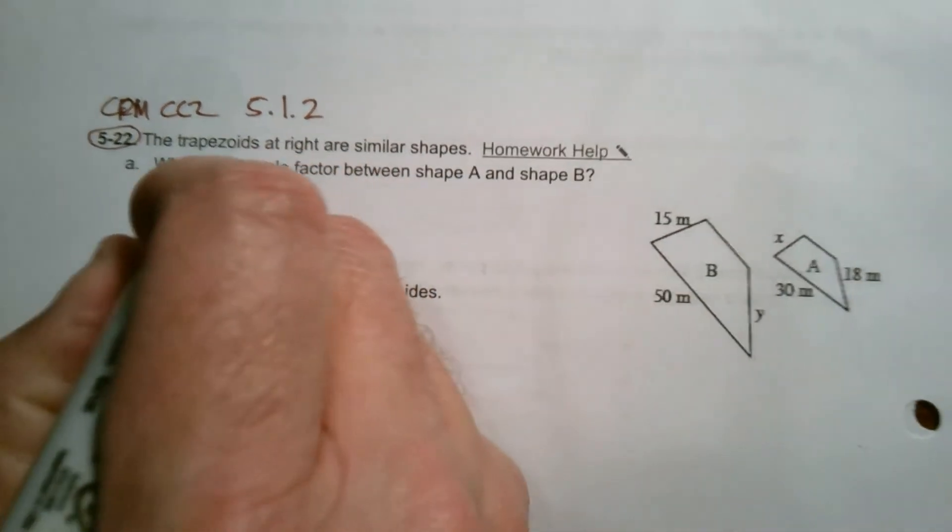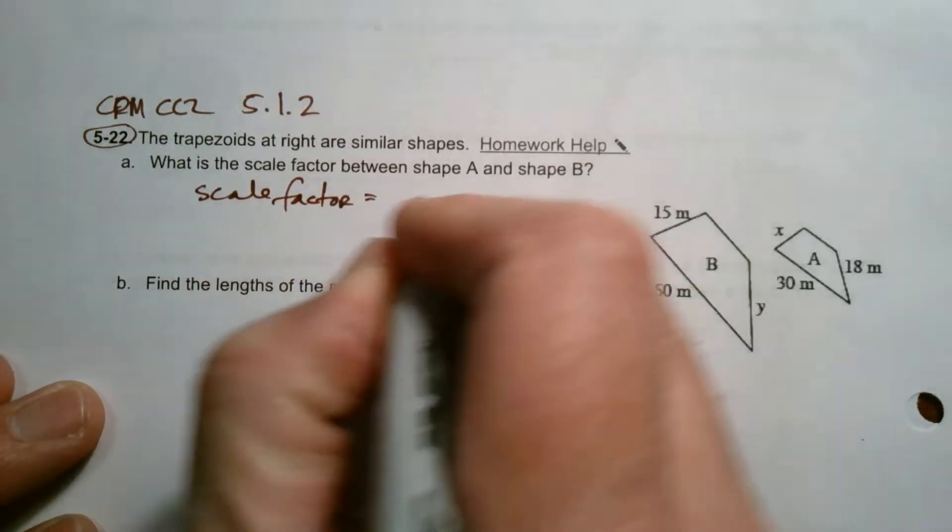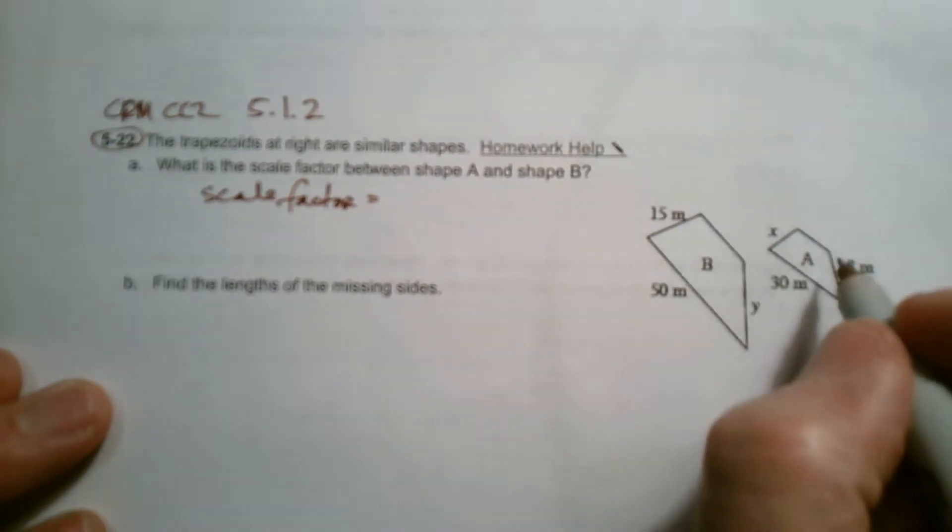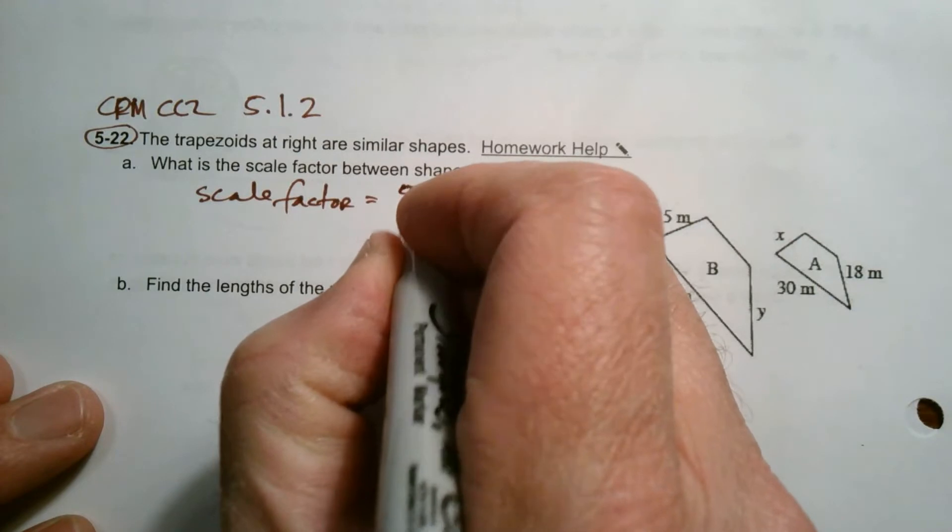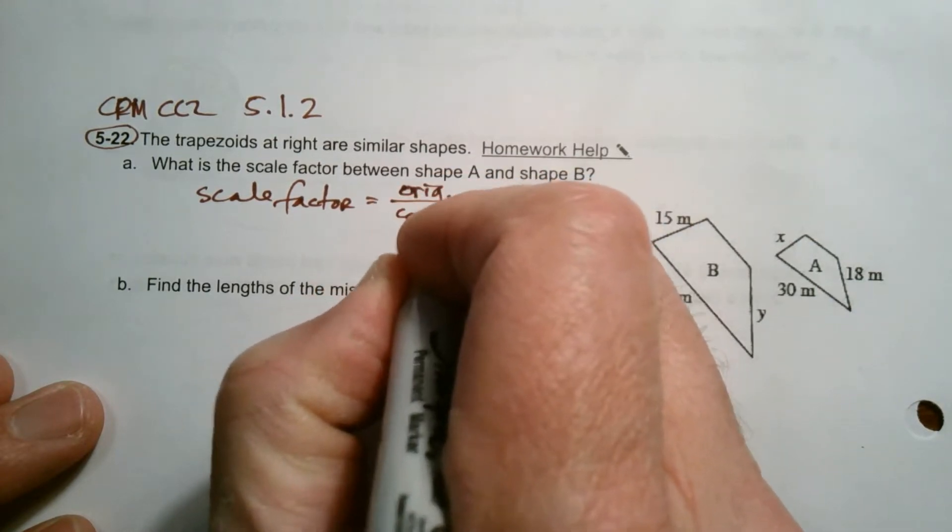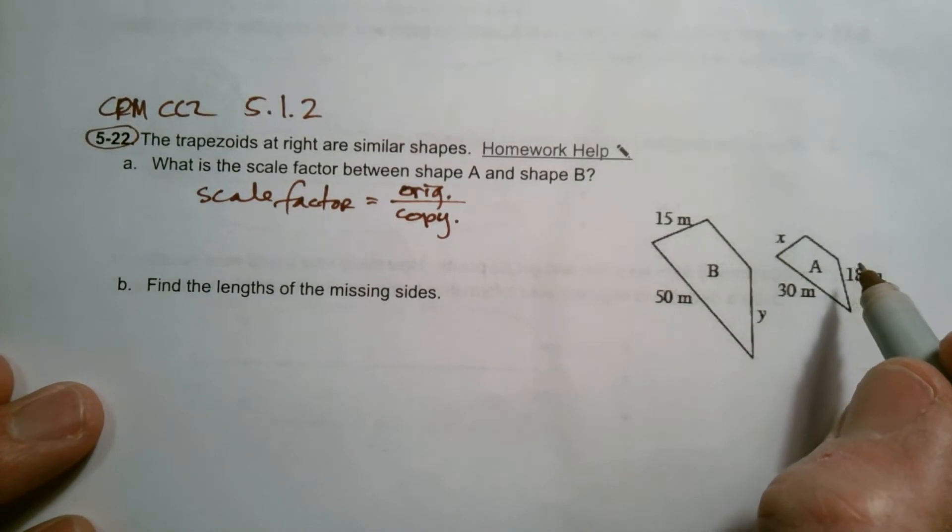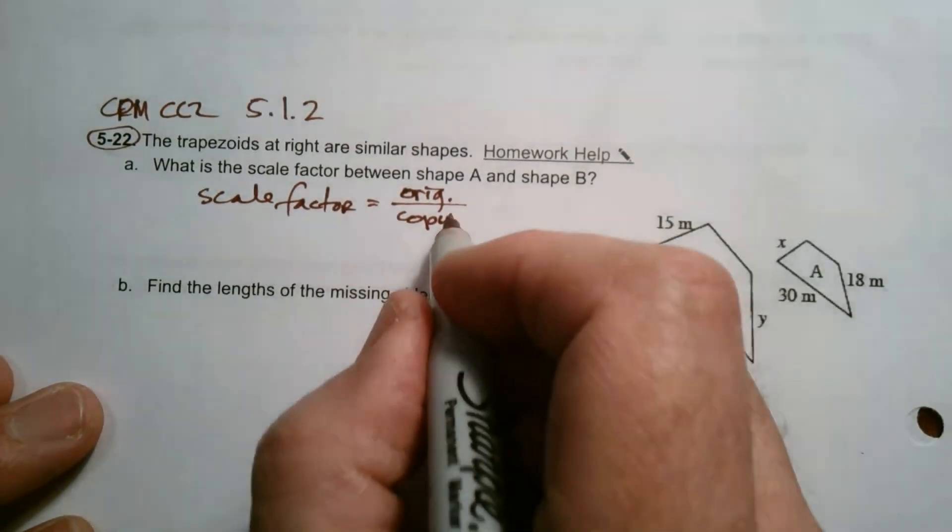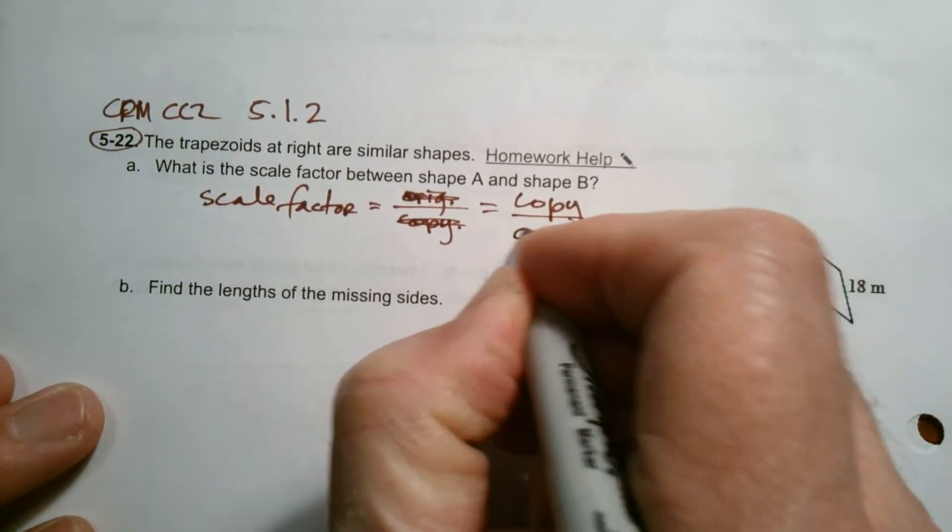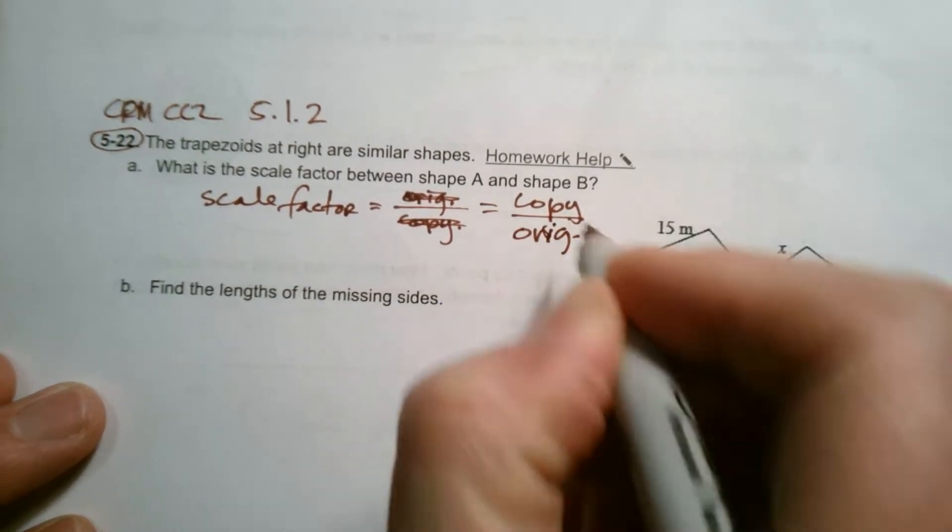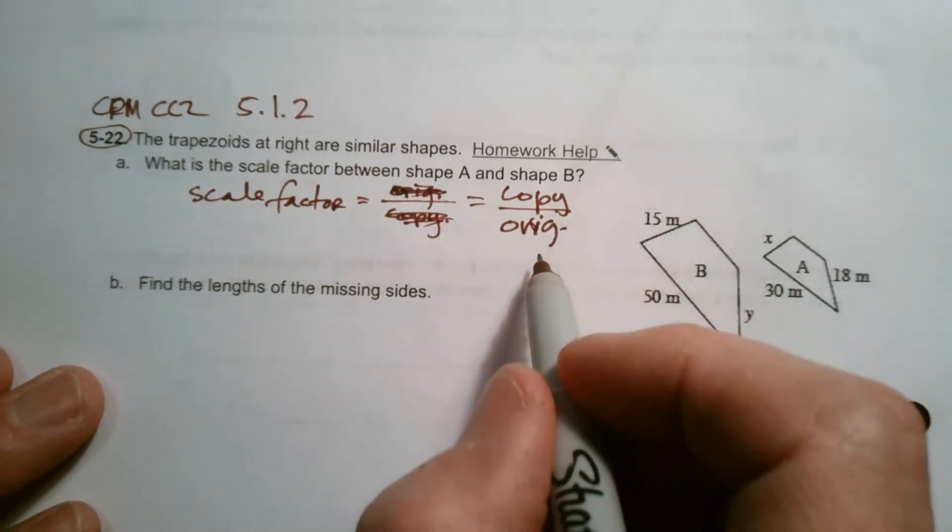So remember scale factor is always taking a corresponding side of the original over the copy. I'm sorry, that's not right. It's the copy over the original. I had to think that one through. So it's the copy over the original.